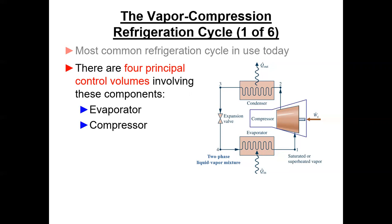We have at least saturated or superheated vapor coming out of the evaporator because it's going into the compressor, and the compressor doesn't like any liquid droplets. We put work in to compress the refrigerant vapor from low pressure to high pressure. It comes out as a fairly high temperature, high pressure superheated refrigerant vapor out of the compressor.